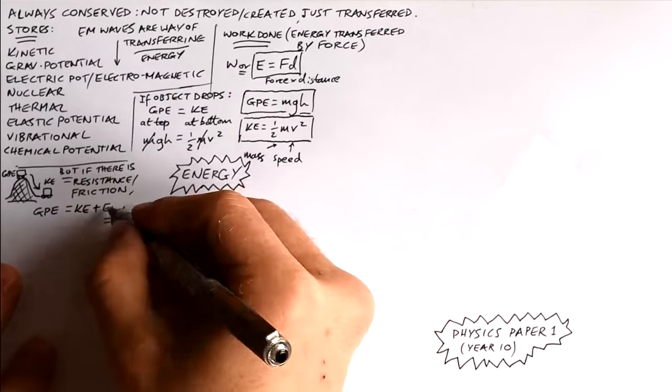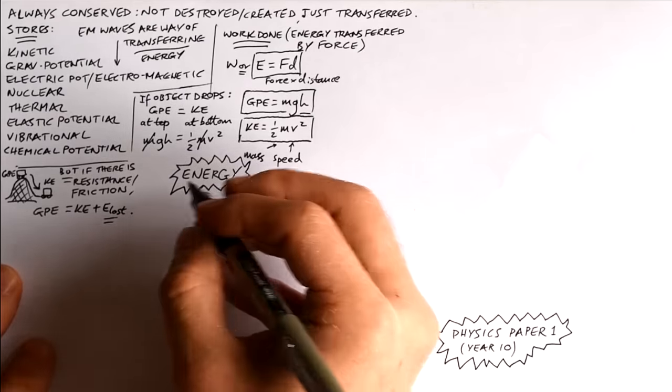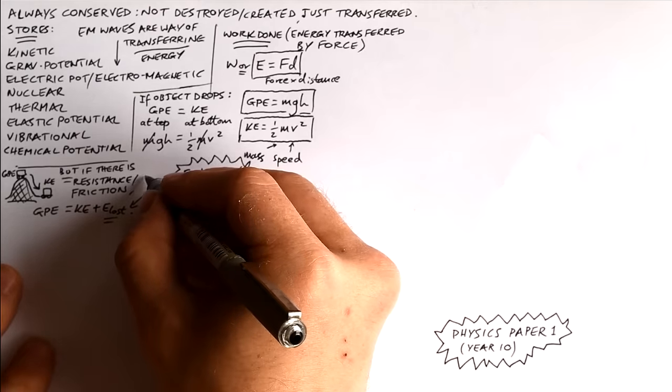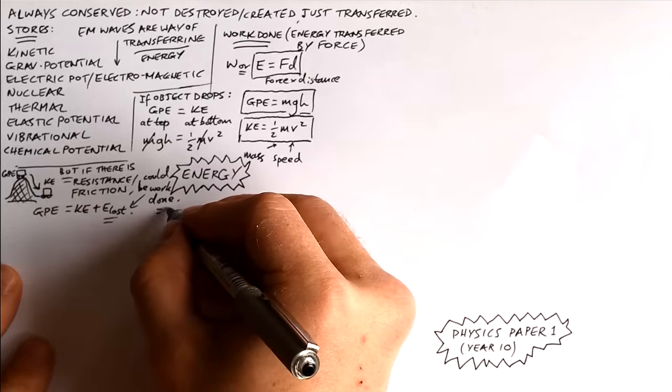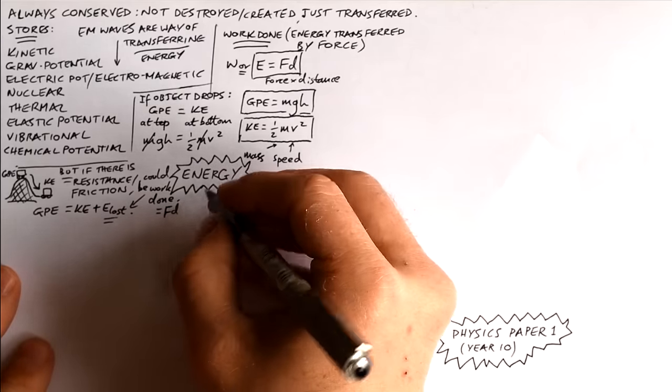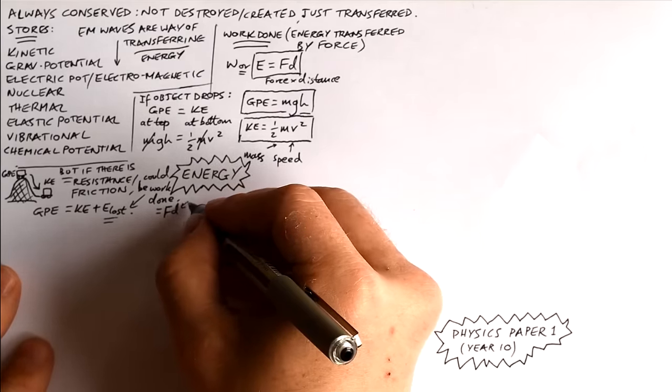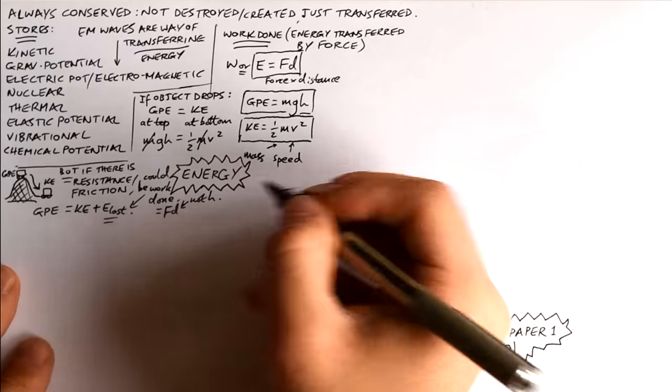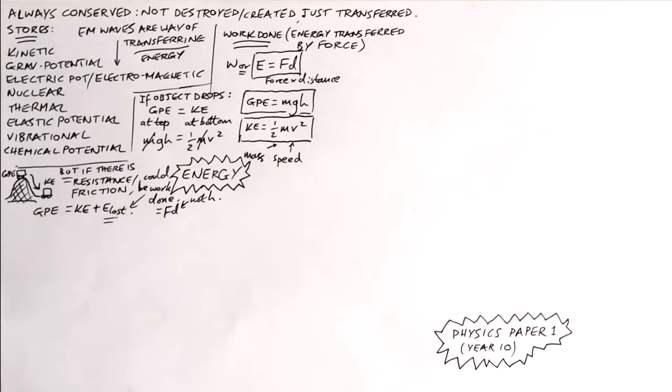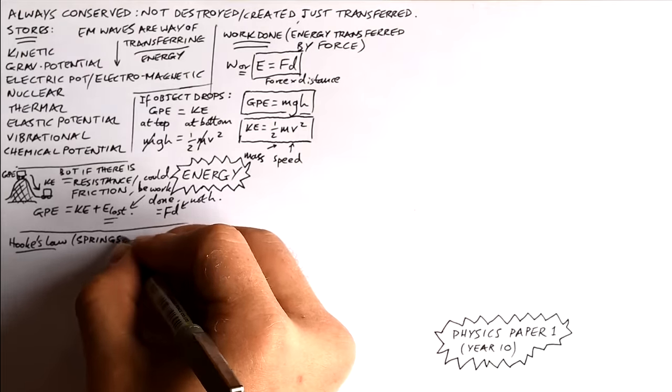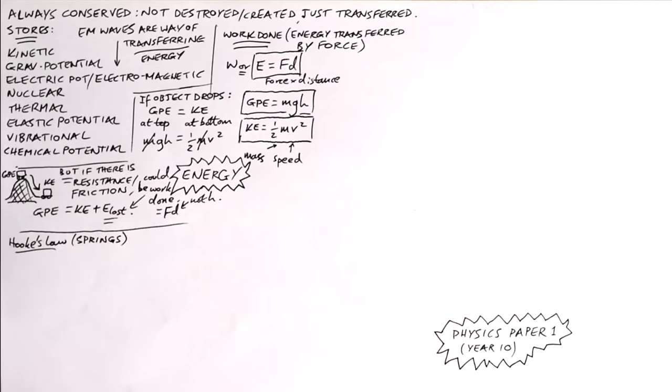So what about if there is air resistance or friction? Well the GPE at the top, some of it is going to be turned into KE but we have energy that's lost. Sometimes you might be asked to find how big the frictional forces are and in this case we say that the energy lost is equal to the work done against friction, so that's equal to FD where F is the frictional force. Be careful D is not necessarily the height that it falls through. If it's on a ramp it's going to be the distance down the ramp that it travels.